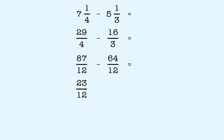Last, write the answer in simplest terms. 23 twelfths becomes 1 and 11 twelfths. So 7 and 1 fourths minus 5 and 1 third is equal to 1 and 11 twelfths.